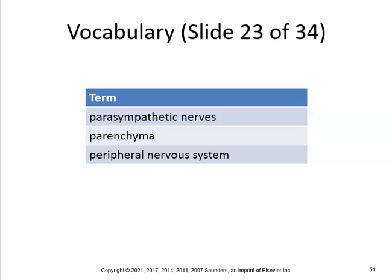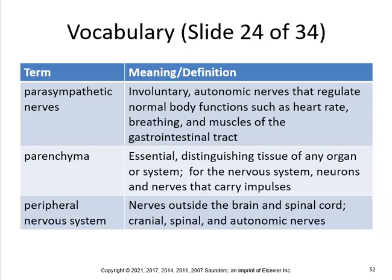Parasympathetic nerves, parenchyma, and the peripheral nervous system. Parasympathetic nerves are involuntary — autonomic nerves that regulate normal body functions such as heart rate, breathing, and muscles of the GI tract. That's your rest and digest. Parenchyma are the essential distinguishing tissue of any organ or system; for the nervous system, that's neurons and nerves that carry impulses. The peripheral nervous system is nerves outside the brain and spinal cord — those are your cranial, spinal, and autonomic nerves.